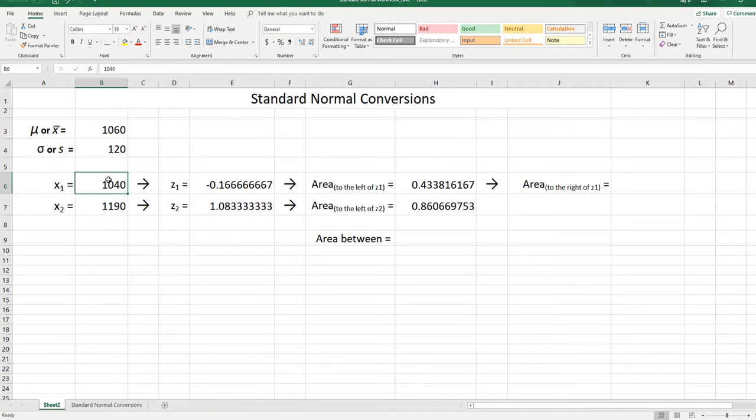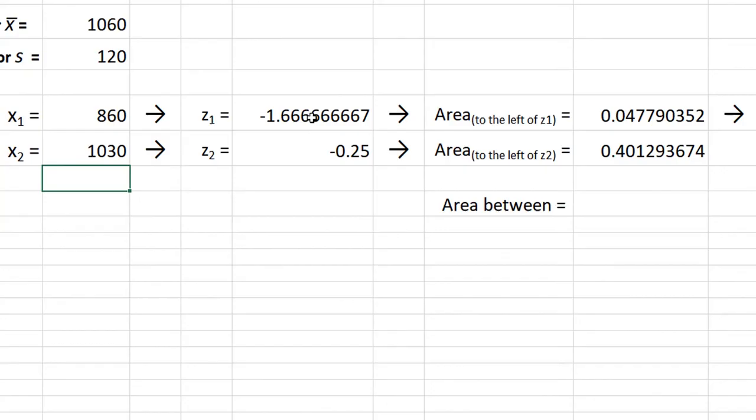Problem B asks for scores between 860 and 1030. A score of 860 translates to a z-value of negative 1.66667. An x-value of 1030 translates to a z-value of negative 0.25. Let's see how things go.